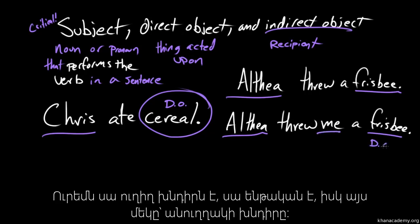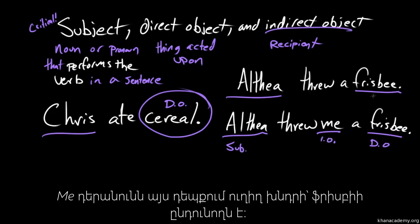So, okay, so we've got this is the direct object, this is the subject, and this is the indirect object. So I am the me, the pronoun me is the recipient of the direct object, the frisbee.